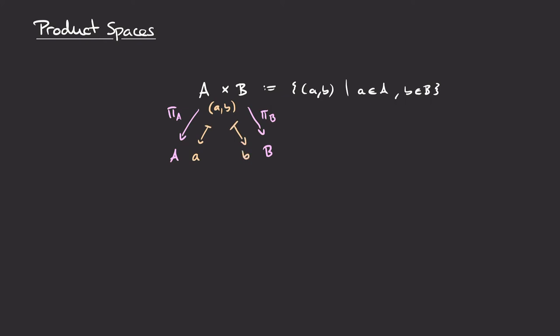It happens that the Cartesian product is universal with respect to these projection maps. If we have some other set T and maps going from T to A and T to B, then there exists a unique map u from T into the Cartesian product A×B making these two triangles commute.